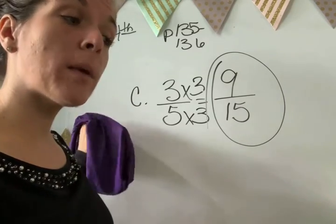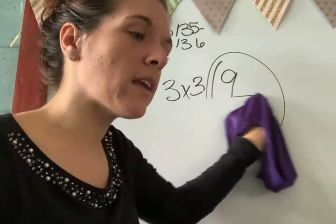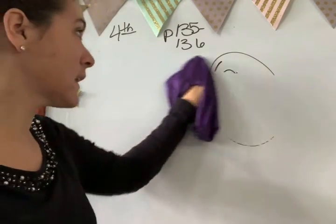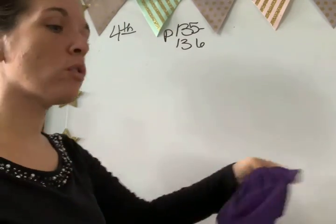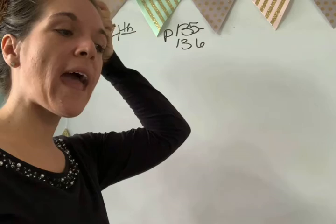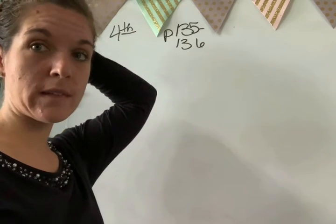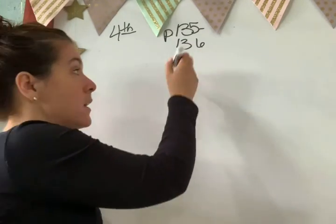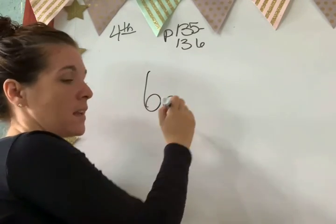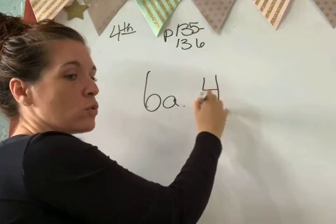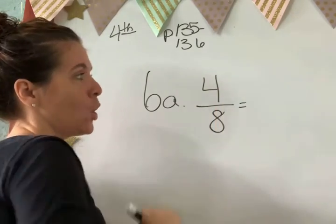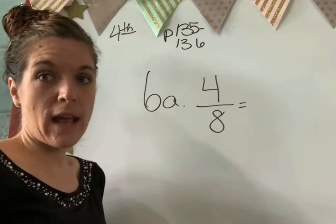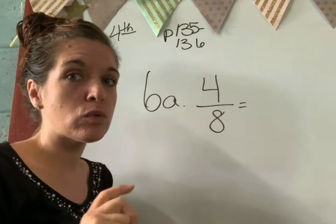Okay. Look at number, look at page 136. Page 136. You can cross out number 5, A, and B. We're not going to do those today. Okay. But we are going to take some time to review some of these concepts on this page. So we have reduce. We need to reduce these.